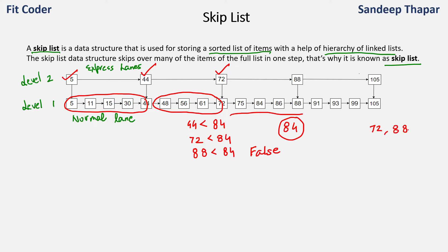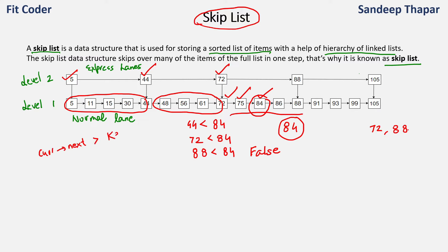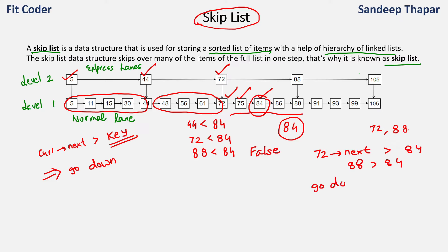Since 88 is greater than 84, we know 84 lies between 72 and 88. So now we search these nodes one by one — we come down to 72 and search 72, 75, and 84. So 84 is the node we were searching for. Since we start traversal from the express lanes we can skip some nodes in the normal lane. Whenever we see that next of current is greater than the key we're searching, we go down. In this example we had only one express lane at level 2, but there can be many levels.